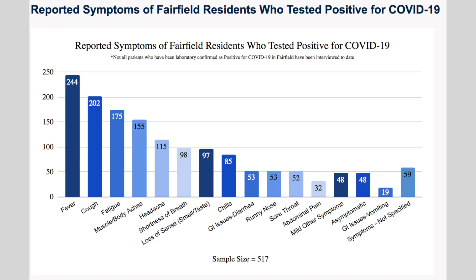Right below that are the reported symptoms for Fairfield residents. This is one we were really excited about — to start seeing what symptoms our residents were experiencing, to get an idea of how they were feeling, including some symptoms that aren't standard fever, cough, or shortness of breath, like GI issues. And we also capture asymptomatic cases.